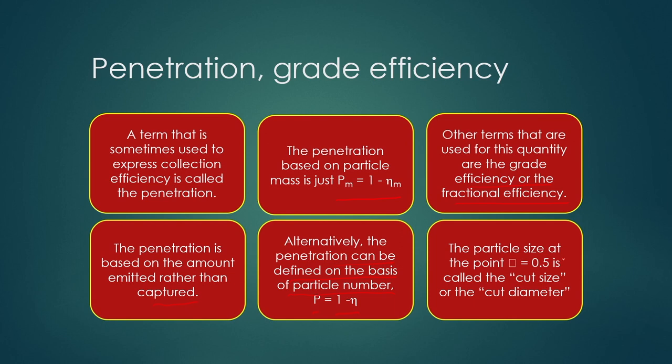The particle size at which eta equals 0.5 — where efficiency is 0.5 — is called the cut size or cut diameter. The particle diameter at which you get 50% efficiency of the device is called the cut diameter. These terms need to be remembered.